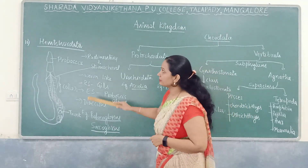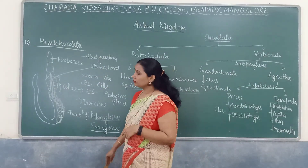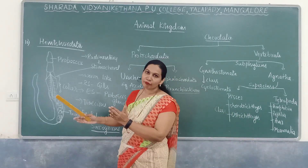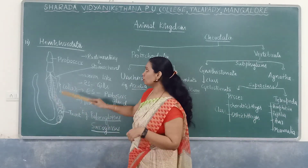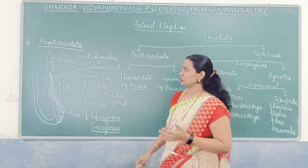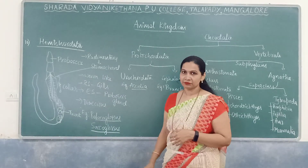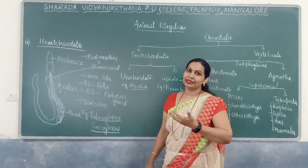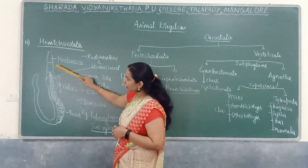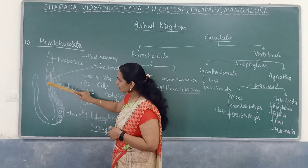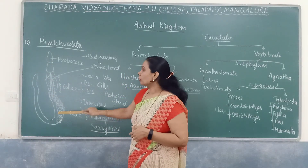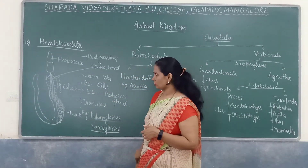The next phylum is phylum Hemichordata. This phylum was previously included in Chordata but is now separated as its own phylum. 'Hemi' means semi — they are a small group of worm-like marine organisms. Their body is divided into three regions: proboscis, collar, and long trunk region.